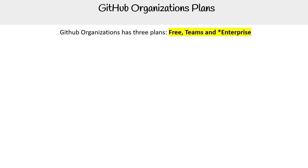For GitHub organizations, there are three types of plans: Free, Teams, and Enterprise. Enterprise has an asterisk because it's more of an upsell to the enterprise account, but when you go to buy, it will show you the Enterprise option there. Now let's talk about Free.